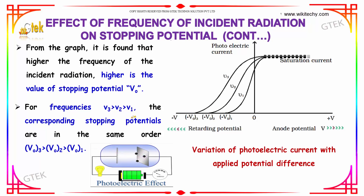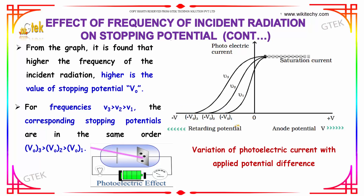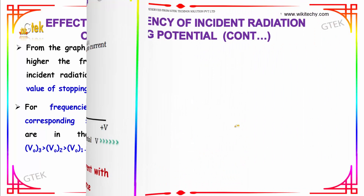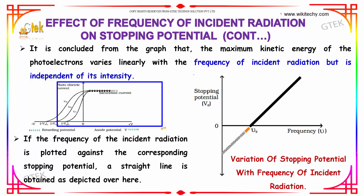From the graph it is found that the higher the frequency of the incident radiation, higher is the stopping potential V₀. The frequencies v3, v2, v1 have corresponding stopping potentials v03, v02, and v01 in the same order. It is concluded from the graph that the maximum kinetic energy of the photoelectrons varies linearly with the frequency of the incident radiation but is independent of the intensity.